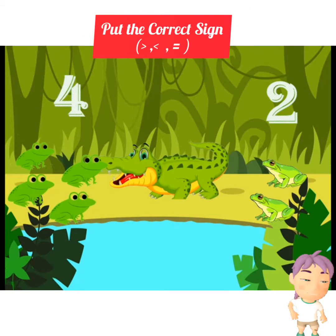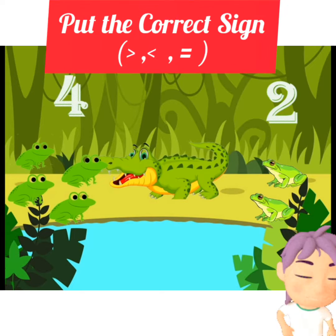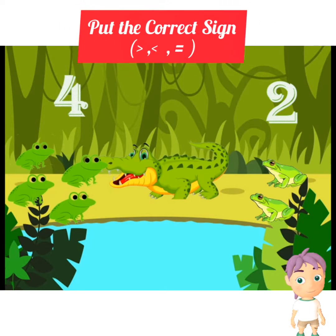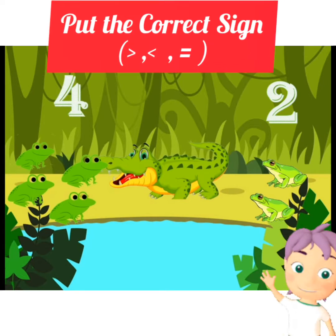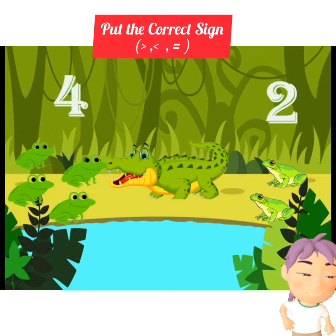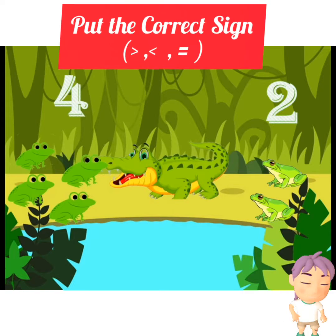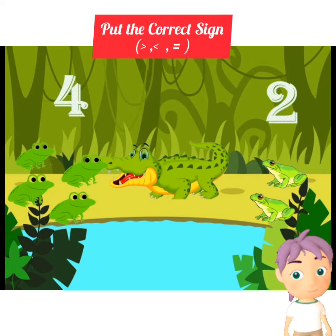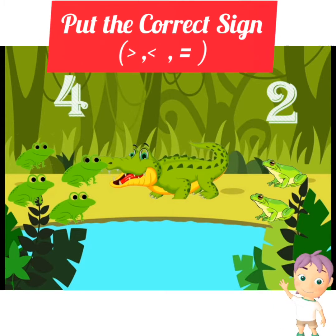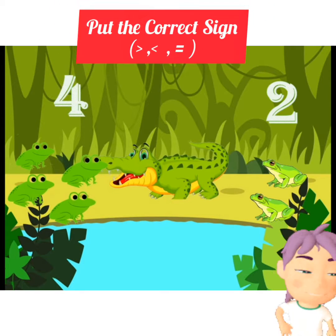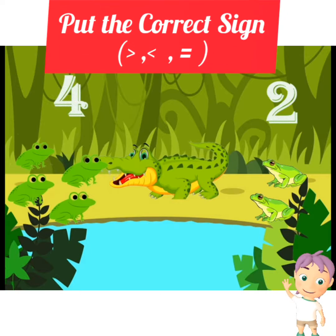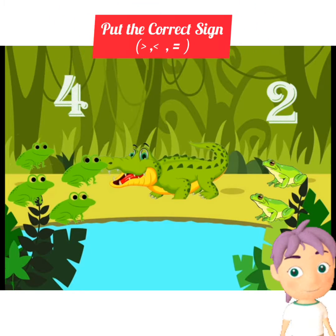There are many frogs in the river. Let's count: one, two, three, four. And on the other side: one, two. I want to eat four frogs.